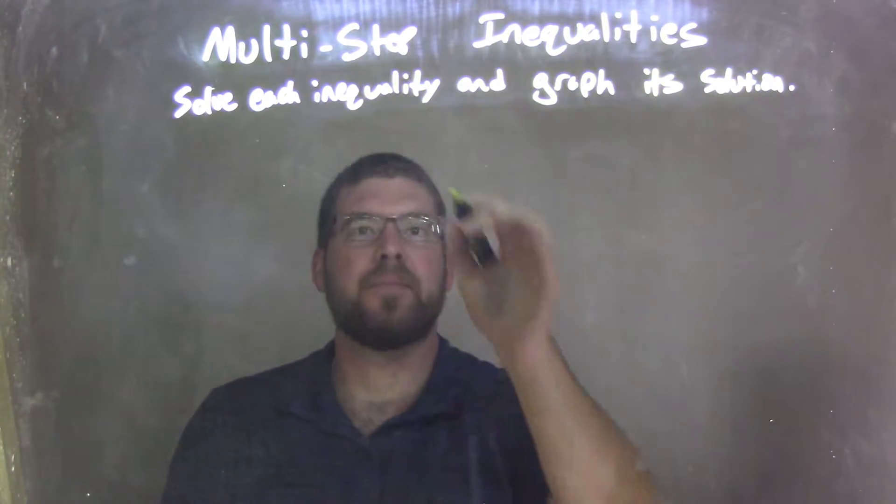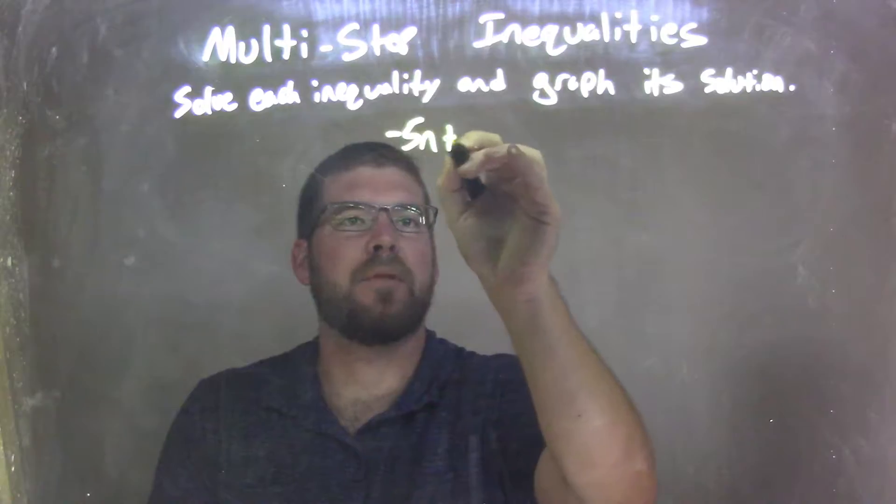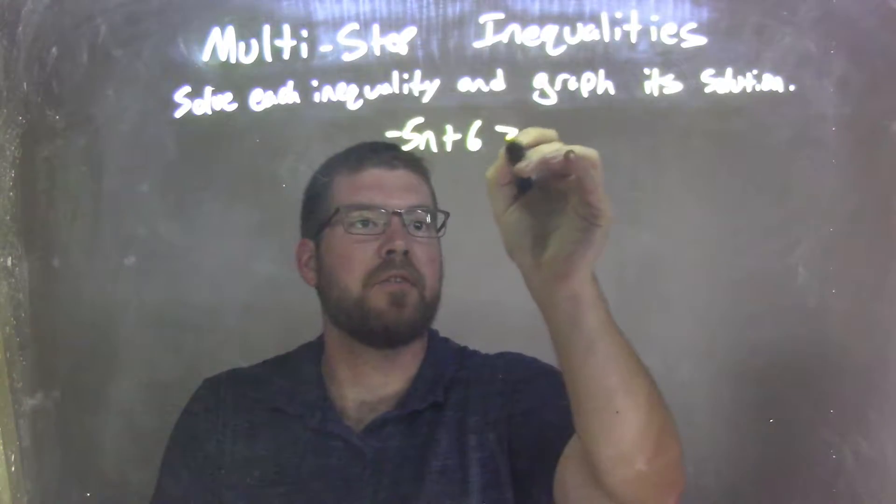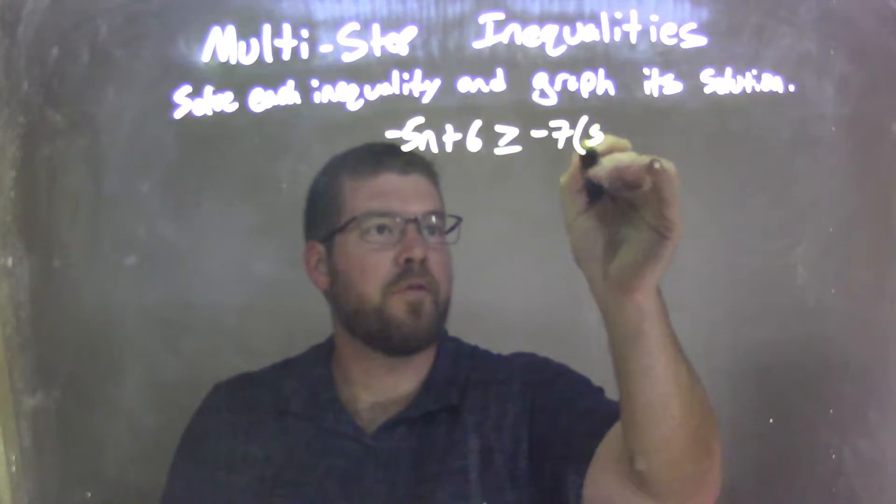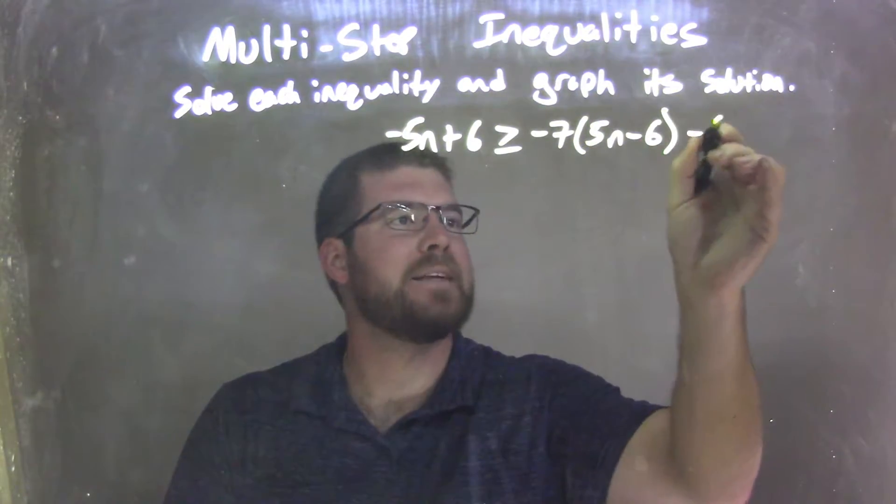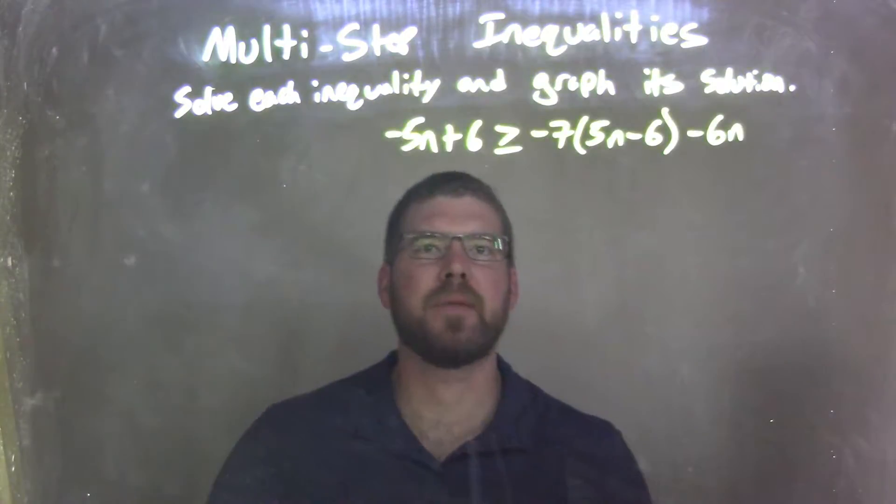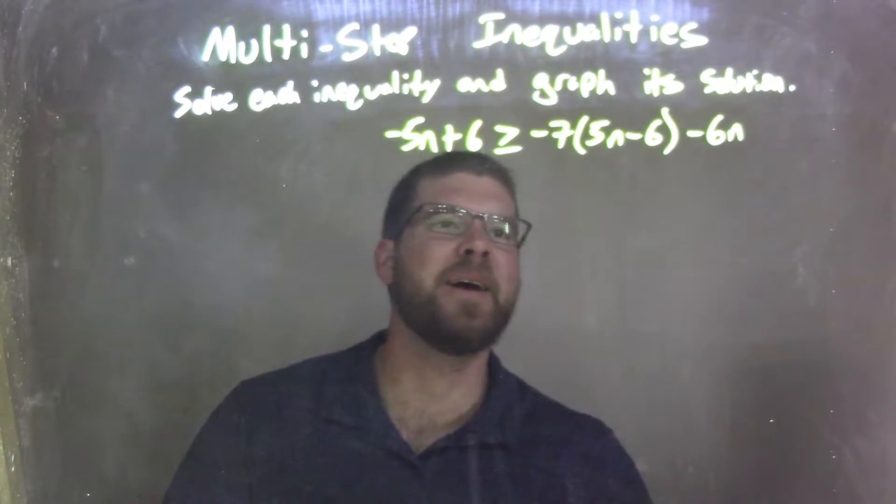So if I was given this inequality, negative 5n plus 6 is greater than or equal to negative 7 times (5n minus 6) minus 6n. It's a little shifted to the right there. Alright.